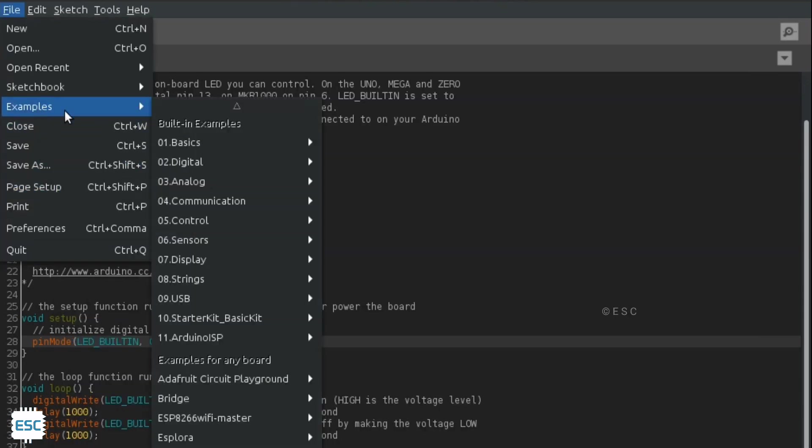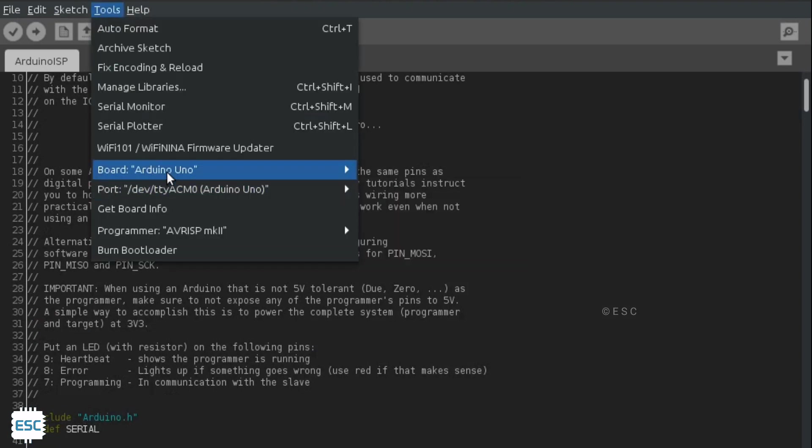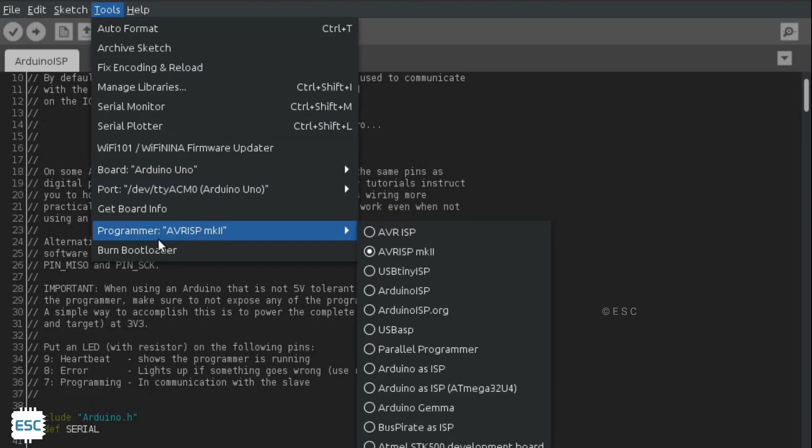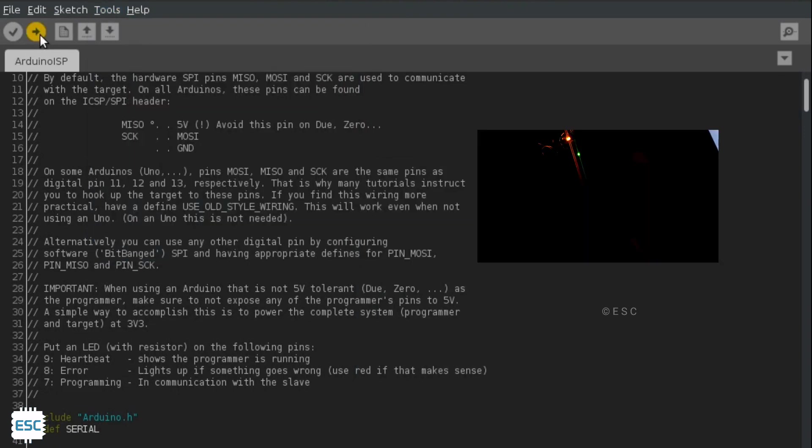Now let's make our Arduino into an ISP programmer. For that, open ISP example sketch, select the correct board and communication port, then click upload. That's it, now our Arduino acts like an ISP programmer.